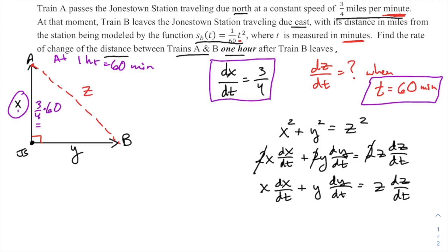So at one hour or 60 minutes, if Train A is traveling at a rate of three-quarters miles per minute for 60 minutes, that should be a distance of—we're just multiplying rate times time to get distance. So three-fourths times 60, kind of nice that it goes in evenly. You get 15 times 3, that would be 45 miles. So x is 45 at this moment we're talking about.